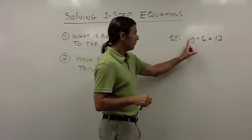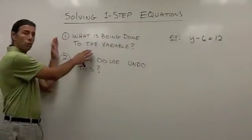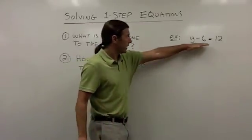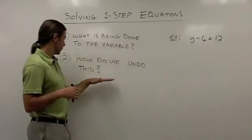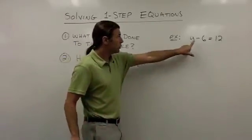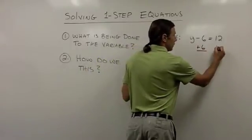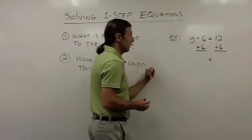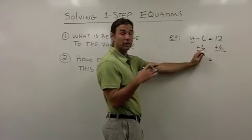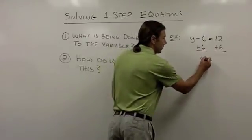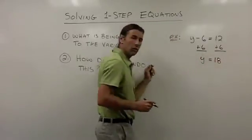In my next example, I have y minus 6 equals 12. Again, we're going to use these same two questions. First: what is being done to the variable? Looking at the variable side, y minus 6 — we're subtracting 6 from that variable. Next question: how do we undo this? To undo the subtraction of 6, we're going to use the addition of 6. So I'm going to add 6 to both sides. On the left side, negative 6 plus 6 gives me 0, so all I'll have left is y. On the right side, 12 plus 6 gives me 18 — the solution to that equation.